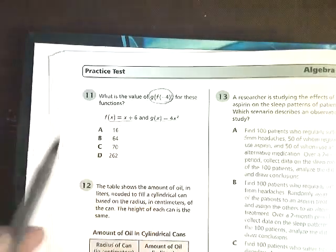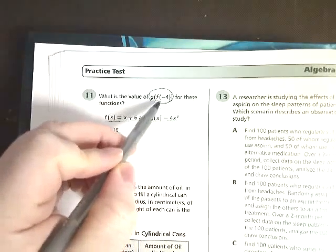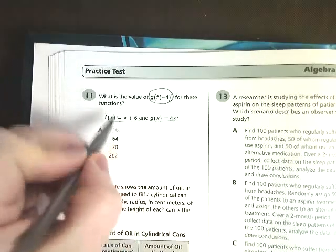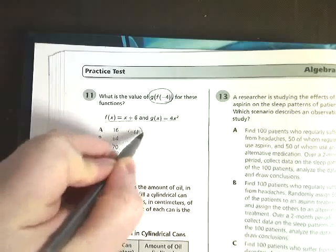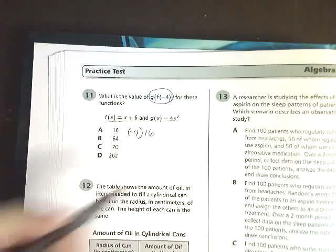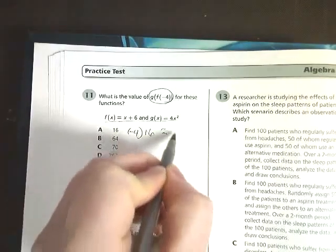So we start with f of x, and it tells us that x is negative 4. So we go to f of x, and in place of x, we put negative 4. And we do that math, and we will get 2.